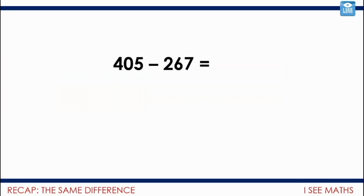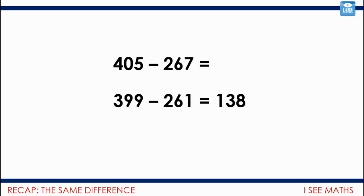Let's have a look at this technique one more time. 405 subtract 267 — is there a way I can make this easier? I think there is. I just need to subtract 6 from both numbers, and then the calculation I get is 399 subtract 261. 300s take 200s is 100. 9 tens take 6 tens is 3 tens. And 9 take 1 is 8. So 405 subtract 267 equals 138. When we really understand this technique, it's amazing how it can help us calculate.